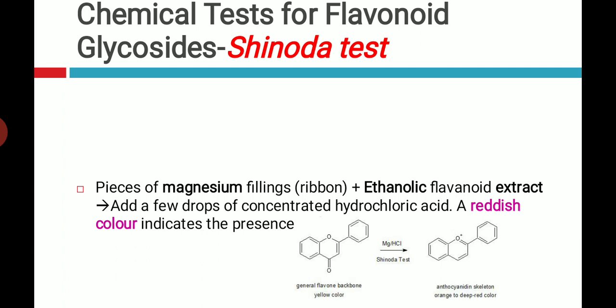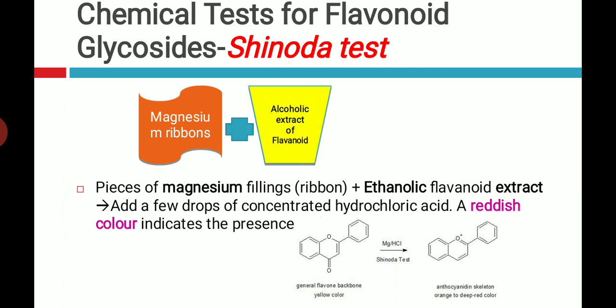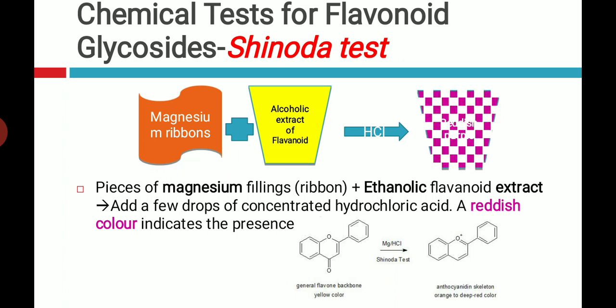The next test is the Shinoda test. This is an important test and is also asked many times in examinations. What we have to do is take magnesium ribbons or filings and add them to the ethanolic or alcoholic extract of a flavonoid-containing drug. Then we add some drops of hydrochloric acid. As shown in the slide, in the presence of magnesium and hydrochloric acid, you get a deep red or reddish-purple color of the flavonoids.